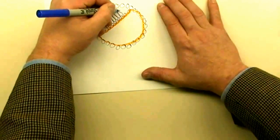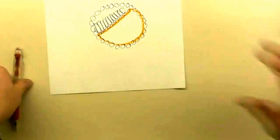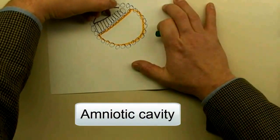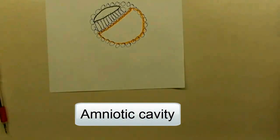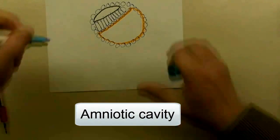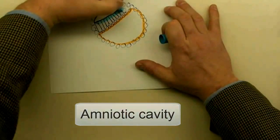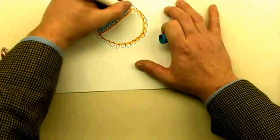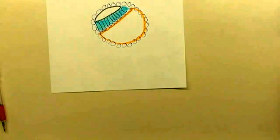The tall epiblast cells have their own cavity, shown right here, referred to as the amnion. The amnion, despite its location right now, will eventually surround and completely encompass the developing embryo and fetus all the way until birth.